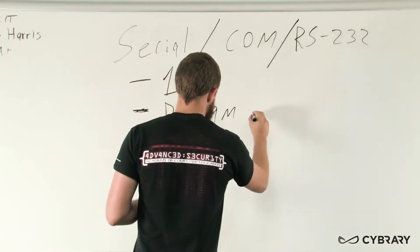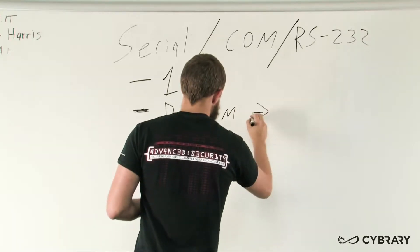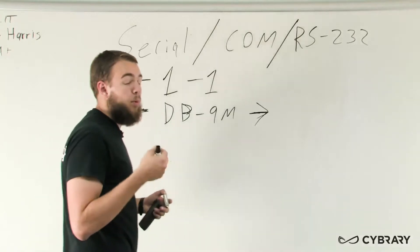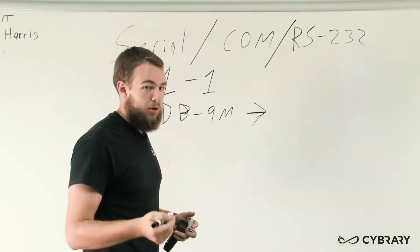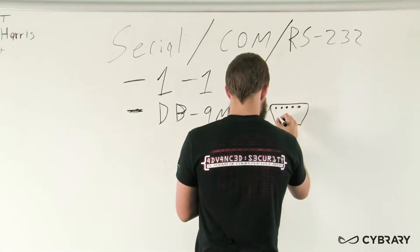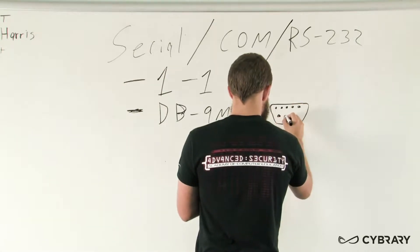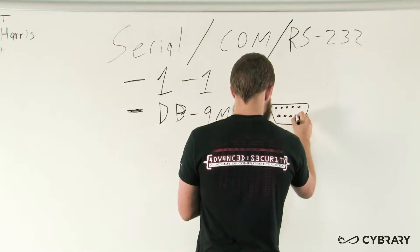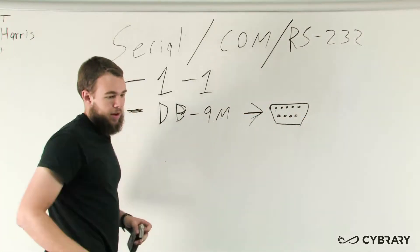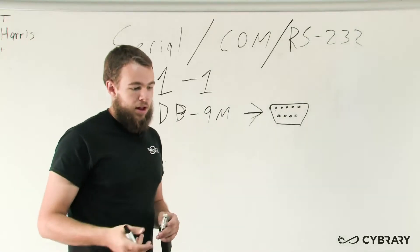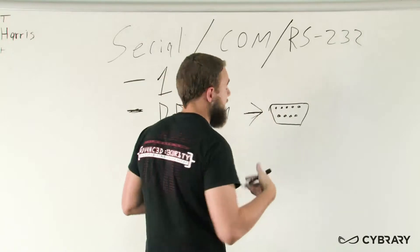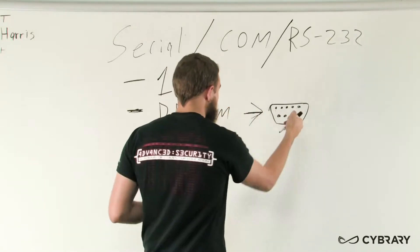We have DB9M, and this is going to be the type of cable that you would see, or the type of port that you would see on your computer or on a laptop that has a serial port. It's going to be a port that has nine pins, five on the top and four on the bottom. The DB-9M, the M stands for male, is what we would normally see on our computers now, our more modern computers to plug into.